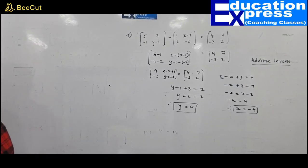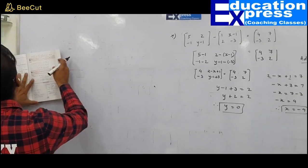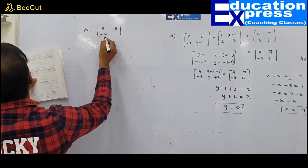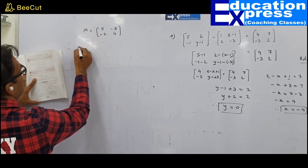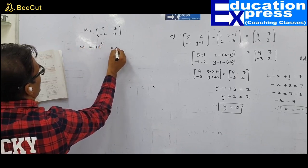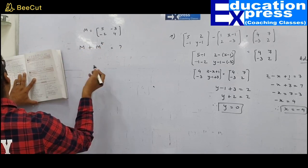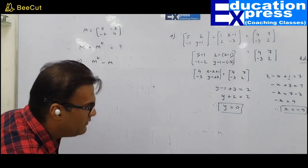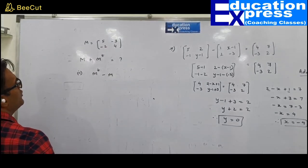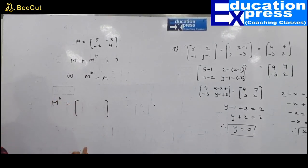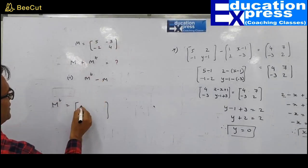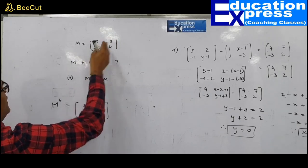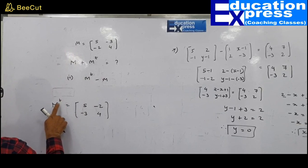Question 8 from exercise 9A: Matrix N=[5,−3;−2,4] is given. Find N plus transpose of N. The transpose is obtained by interchanging rows to columns: row [5,−3] becomes column; row [−2,4] becomes column. So N^T=[5,−2;−3,4]. Both matrices are 2×2 — same order — so they can be added.